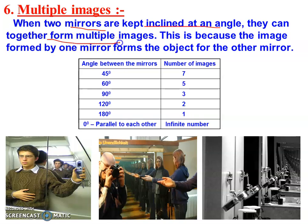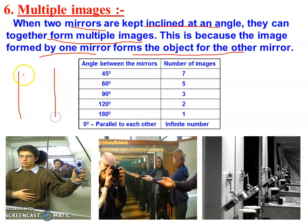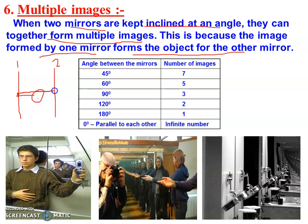Multiple images form because the image formed by one mirror acts as the object for the other mirror. For example, with mirror number one and mirror number two, the image of the object formed by the first mirror will act as an object for the second mirror, and then the image formed by the second mirror will act as an object for the first mirror, and so on.